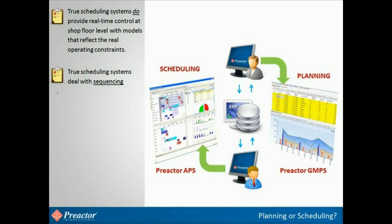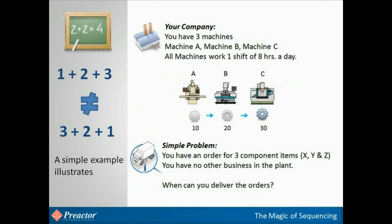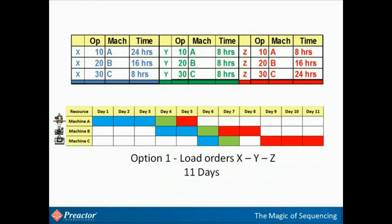We keep on talking about sequencing and why it can be important. This simple example shows why. We have three machines, A, B, and C. Each machine does one process step. They all work in an eight-hour day. All the components we make have the same three steps on the same three machines. In the example, we have three products, X, Y, and Z. The top table shows how long it takes for each operation step for each product.